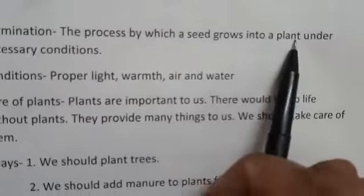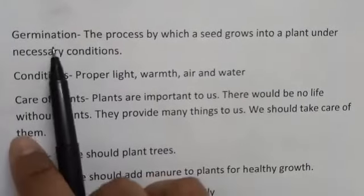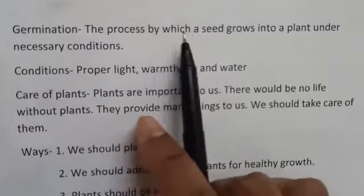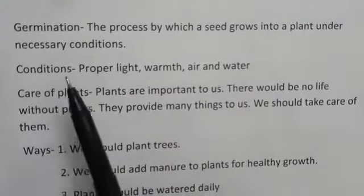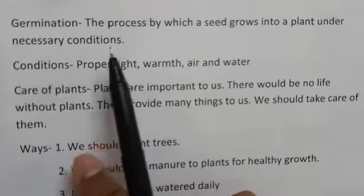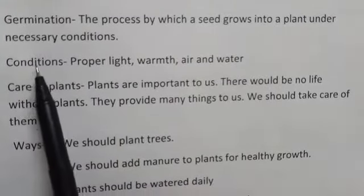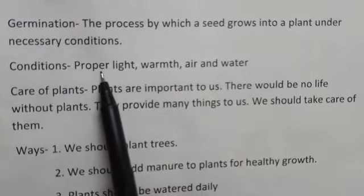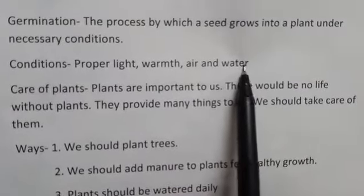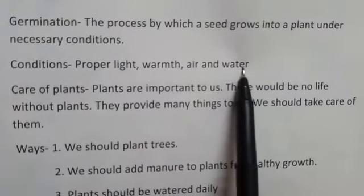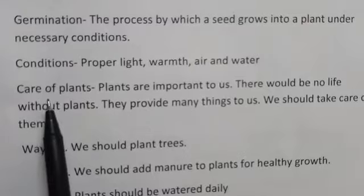Germination: the process by which a seed grows into a plant under necessary conditions is called germination. The conditions required for germination are proper light, warm air, and water.